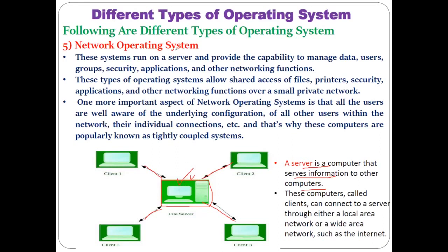On the server computer, the network operating system is installed. The role performed by this server is the sharing of different kinds of information to the different client computers, as well as sharing files, printers, security applications, and other things. Clients can connect to the server through either a local area network or a wide area network such as the internet. The network operating system works best with physical connections to all client computers.